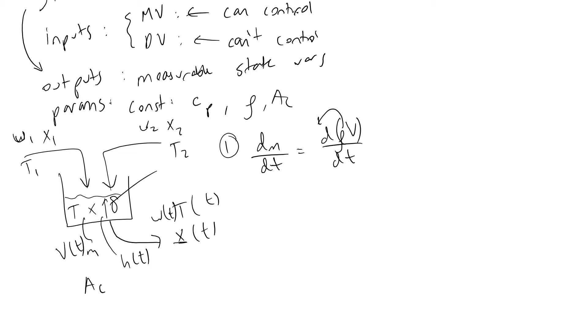Volume equals area of the base AC times height h. Since AC is constant, we have ρ times AC times dh/dt because height is the only variable with time dependence.